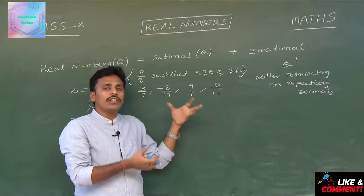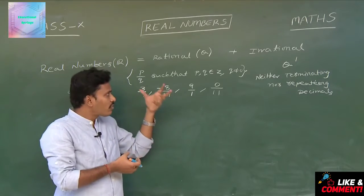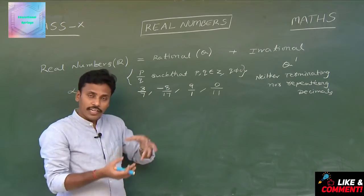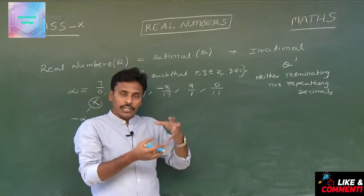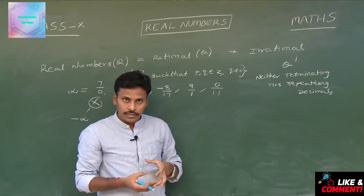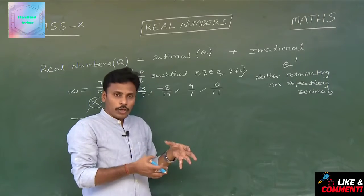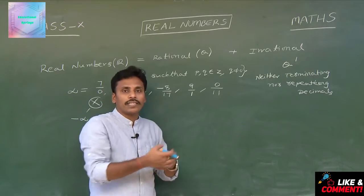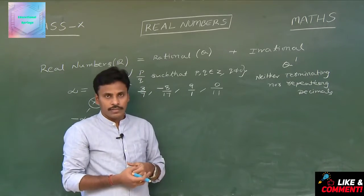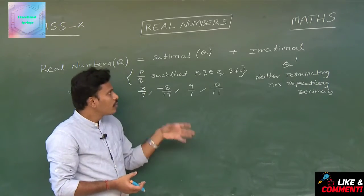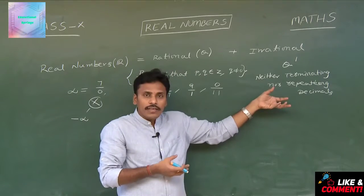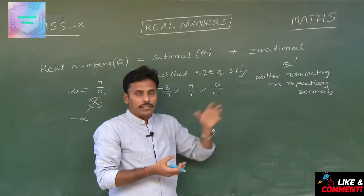We need to discuss about the decimal conversion of rationals and irrationals in this chapter, but in another class. Now let us go with some examples of irrationals.